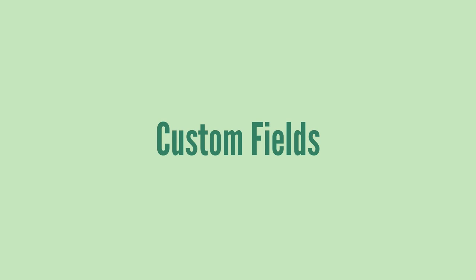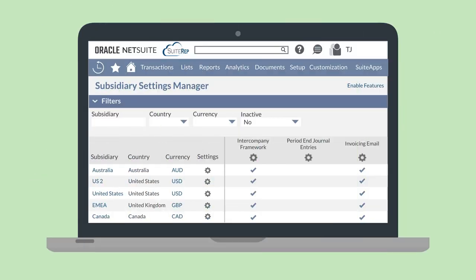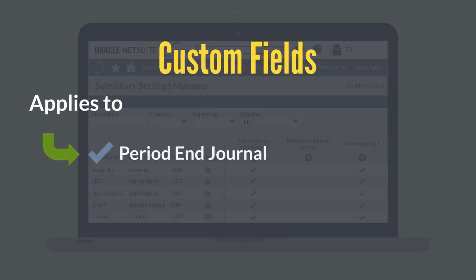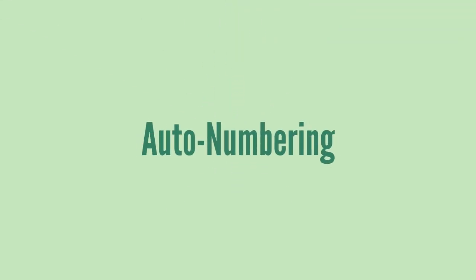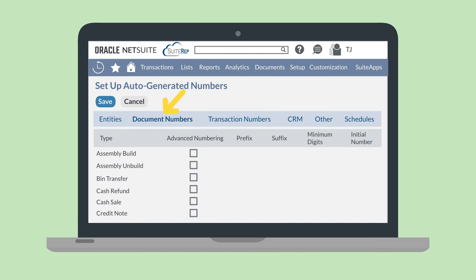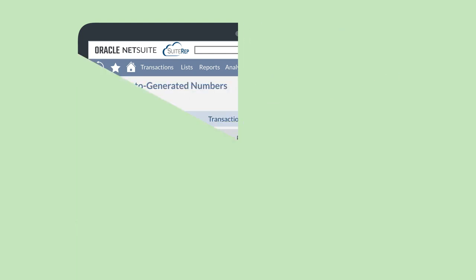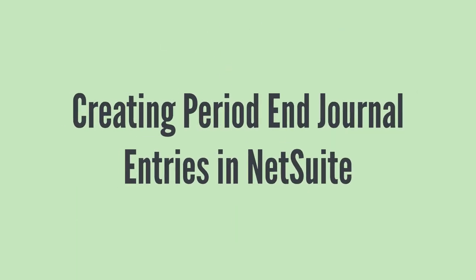Under the column for period end journal entries, you can enable that feature for the appropriate subsidiaries. If you want to customize period end journals, you can do that once the feature is enabled — when creating a custom transaction body field or custom transaction line field, you can select period end journal in the applies-to checkbox. You can also set up a specific numbering system for your period end journals on the document number sub-tab of the Auto Generated Numbers page under Setup > Company > Auto Generated Numbers.